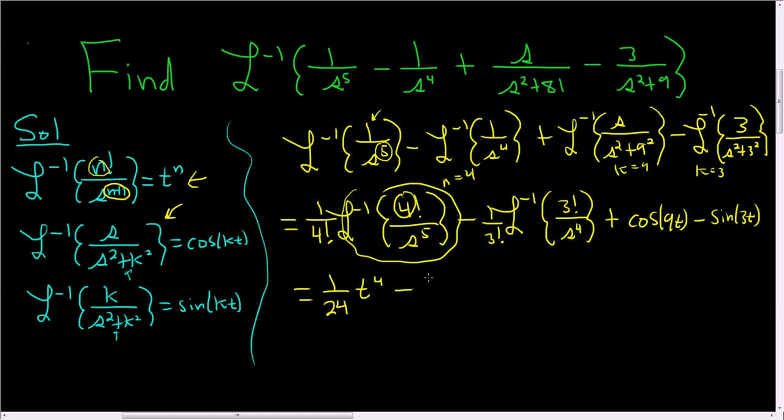Over here, 3 factorial is 6, so we get 1 over 6. And this piece here, that's our n, so it's going to be t cubed.